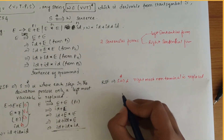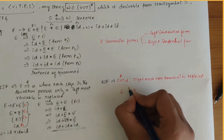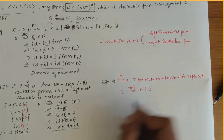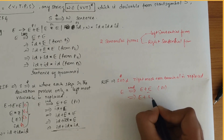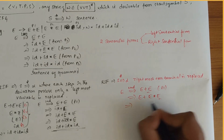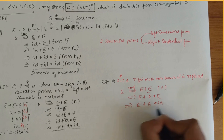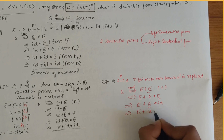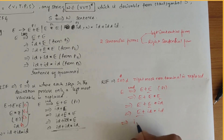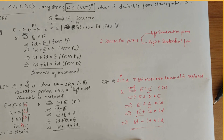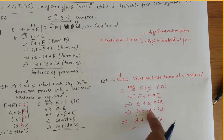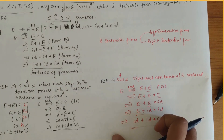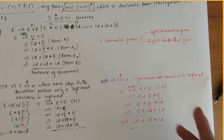Let's take the same grammar and do the rightmost derivation (RMD). First E plus E from P1. Then changing the rightmost E: E plus E star E. Then E plus id star id. Then id plus id star id. In the above rightmost derivation, the string of grammar symbols obtained at each step depicts the right sentential form of the given grammar.